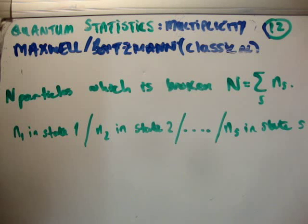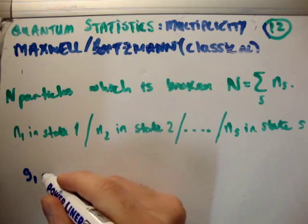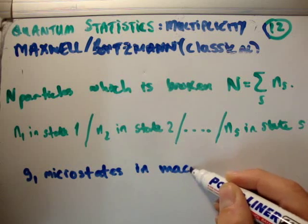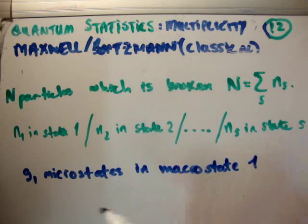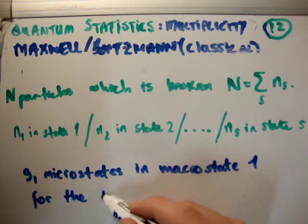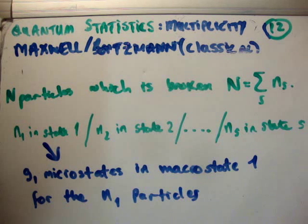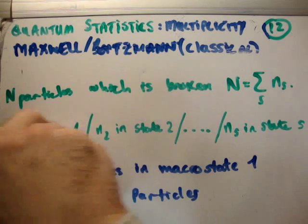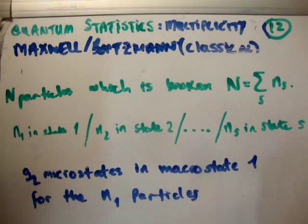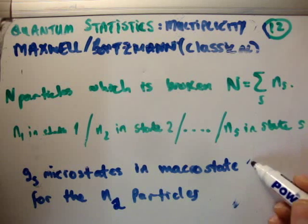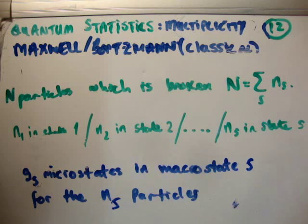Each of these macrostates has the following. There are G1 microstates in macrostate 1 for the N sub 1 particles. Something similar happens for each of the other macrostates. We could say there are G sub 2 microstates in macrostate 2 for the N sub 2 particles. Or to generalize, there are G sub S microstates in macrostate S for the N sub S particles. I hope that's pretty clear. I've probably labored the point at this stage.